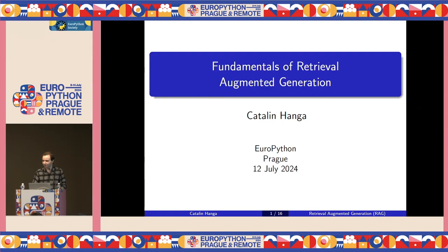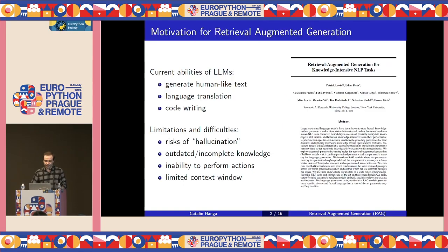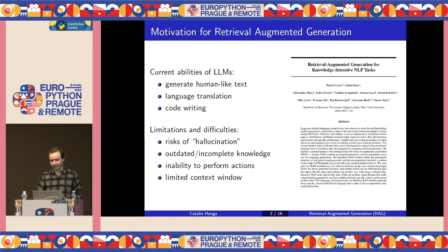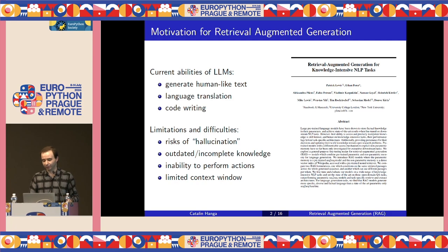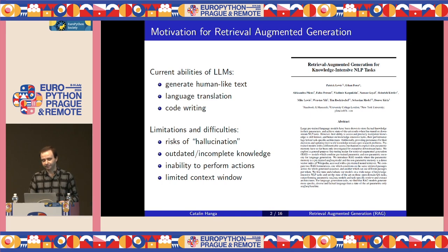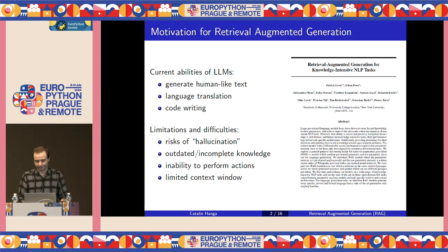Thank you very much for the introduction. In the last two years, especially since the release of ChatGPT, we have seen language models become increasingly more capable on a variety of NLP tasks. For example, they can generate coherent text which is almost indistinguishable from that of a human, they can accurately translate from one foreign language to another, and they can even write code in most major programming languages.